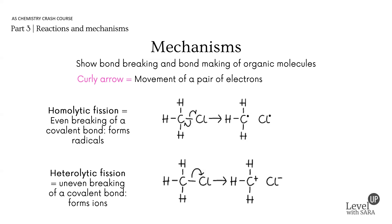Homolytic fission forms a radical. A radical is nothing else than the element itself, because elements have an unpaired electron. Think about chlorine: it's in group seven, so it has seven electrons in the outer shell as an element, not when bonded. It has a lone electron, and that's what makes an element so reactive — technically, an element is a radical.